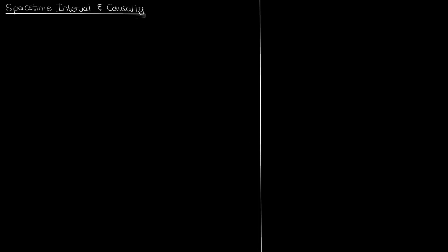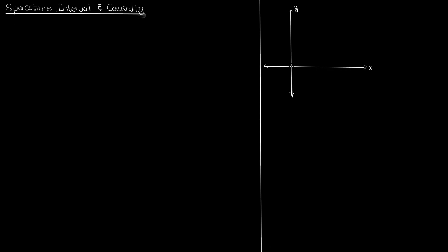Before we begin, let's forget momentarily about special relativity and go back to regular coordinate system mathematics. Say I have a coordinate system with the spatial coordinates x and y — your regular Cartesian plane — and suppose I have a stick in this coordinate system that is l units long, with its tip at (xs, ys) and its base at the origin. You can write the length of the stick l in terms of the coordinates xs and ys using the Pythagorean theorem.